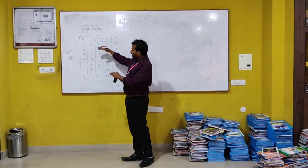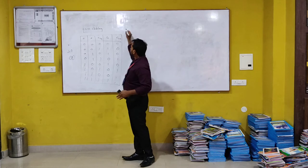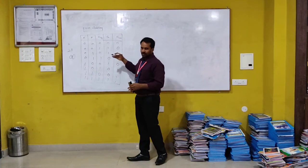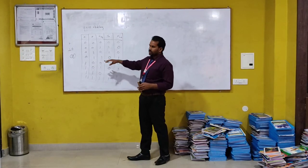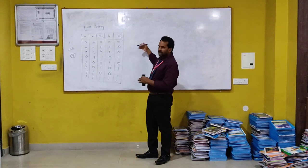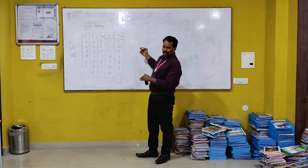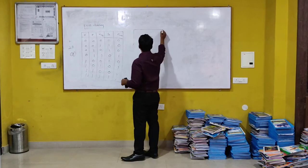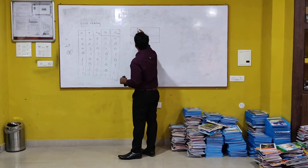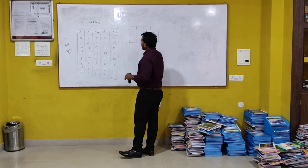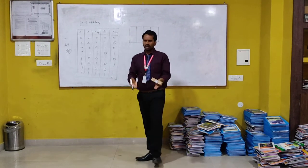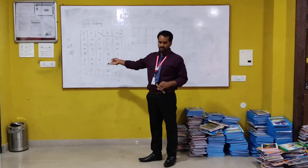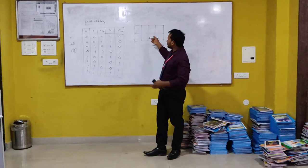We have obtained the truth table. The second step is to get the equations. I am going to build the K-map for sum and then for carry out. Since I have three inputs, I need to use a three-variable K-map — in the half adder we used a two-variable K-map because we had only two inputs, but here I have three inputs.